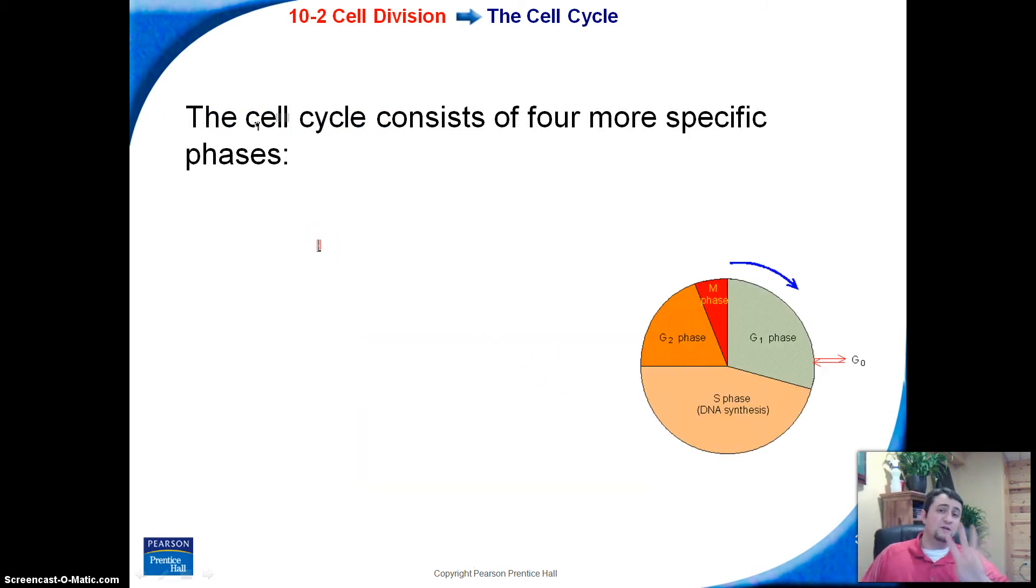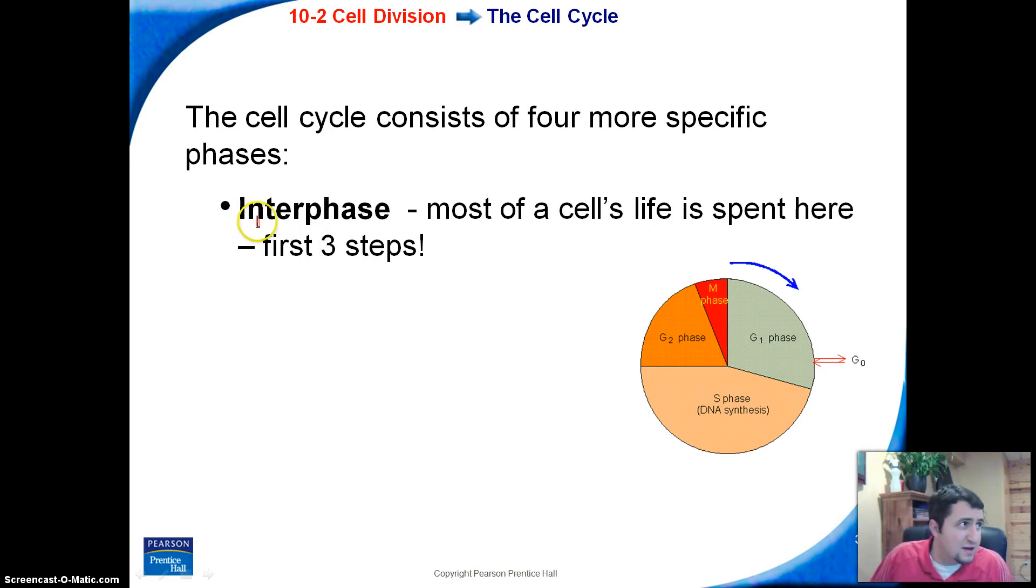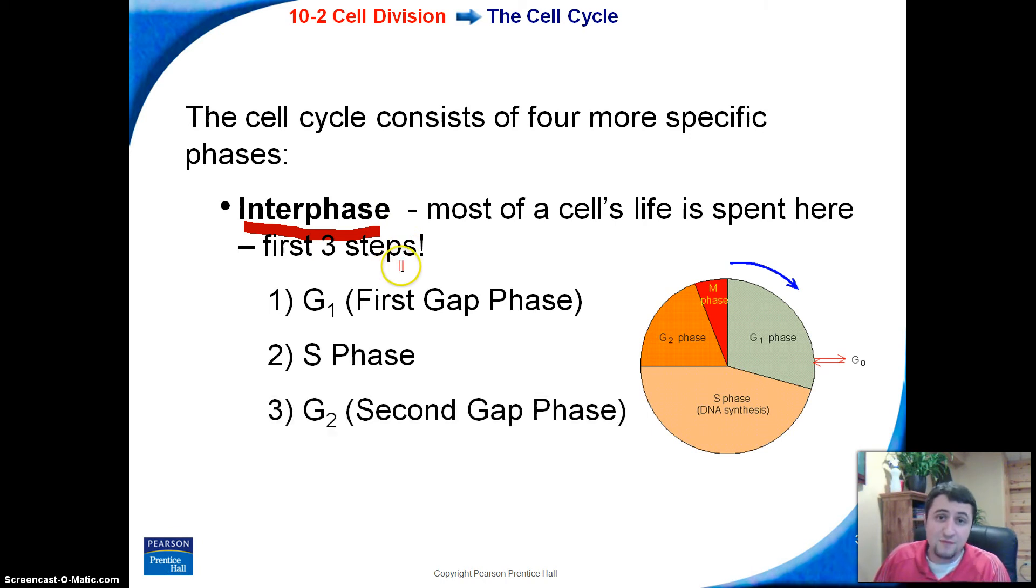Again, the cell cycle consists of four major phases. Interphase is actually the start of three of those four major phases. So interphase is composed of three major phases: we have the G1 phase, we have the S phase, we have the G2 phase, and then we have mitosis, that's the M phase. That's actually where we're going to get cell division occurring.